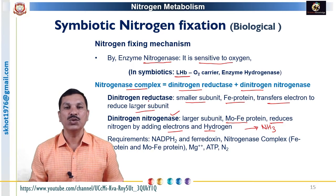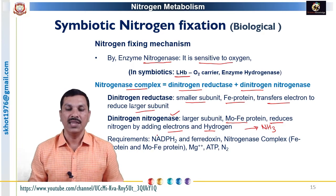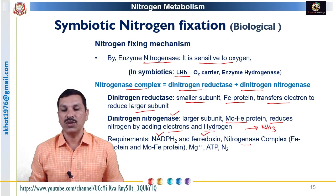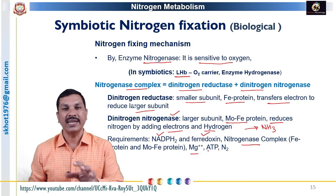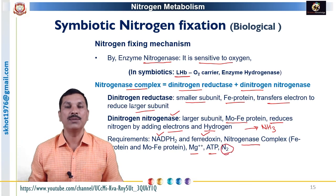The nitrogenase complex works in association with a number of cofactors: NADPH2 and reduced ferredoxin, which provide electrons; the nitrogenase complex itself; magnesium, which works as a catalyst; ATP, which works as an energy source; and nitrogen gas, which is the raw material for this process.